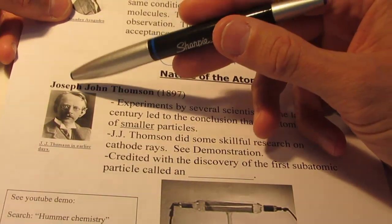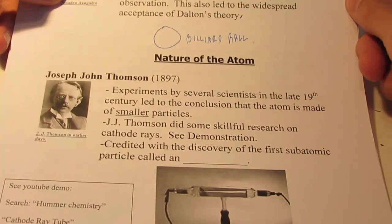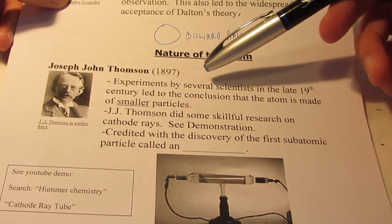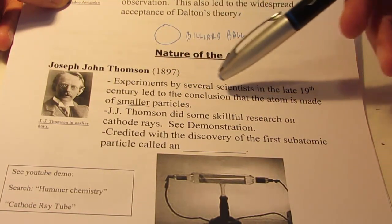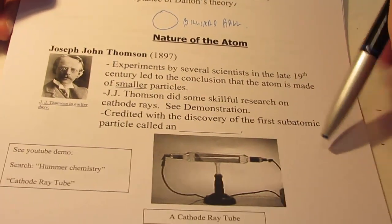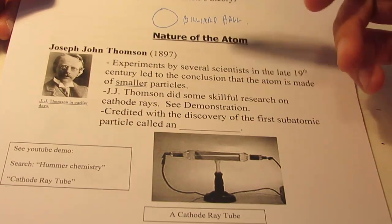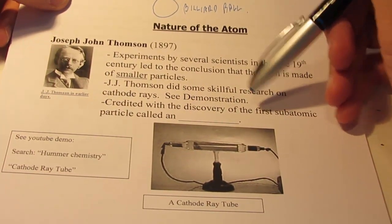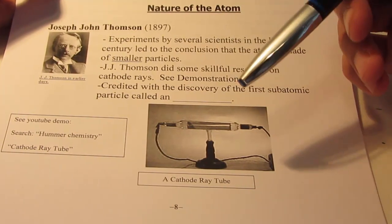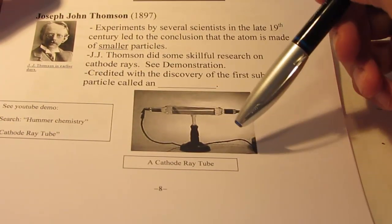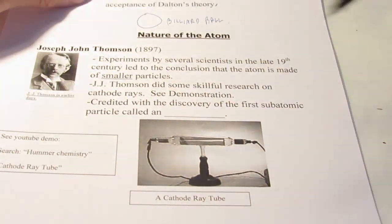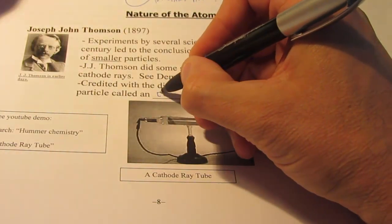In 1897, Joseph John Thompson, he's known as J.J. Thompson, performed some experiments with something called the cathode ray tube. So experiments by several scientists in the late 19th century led to the conclusion that an atom is made up of even smaller particles. J.J. Thompson did some skillful research on cathode rays, and J.J. Thompson discovered the first subatomic particle, and that subatomic particle is known as an electron.